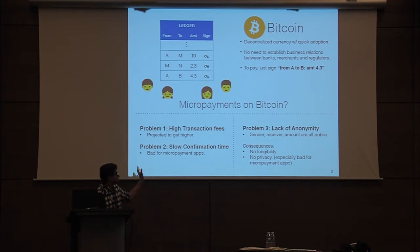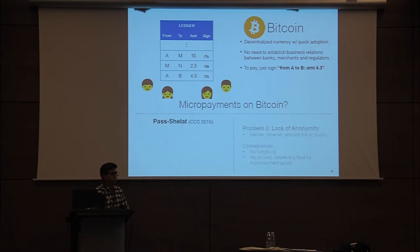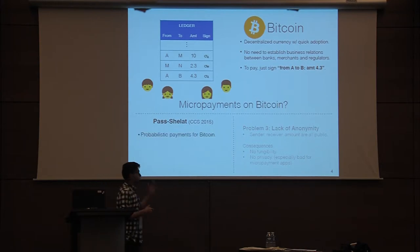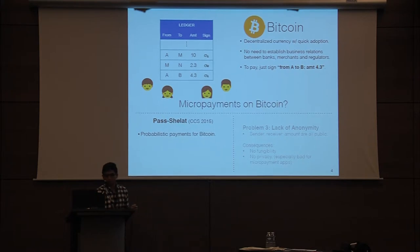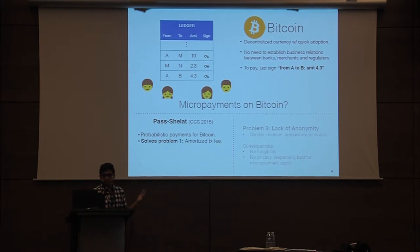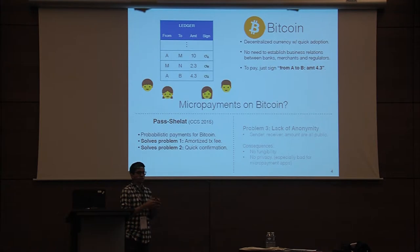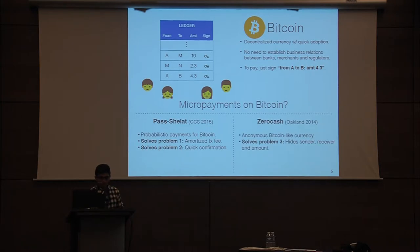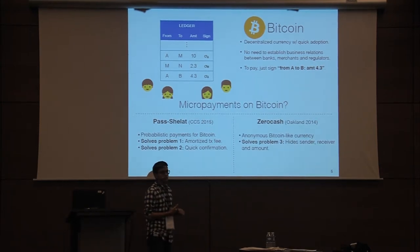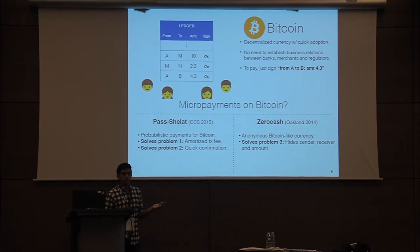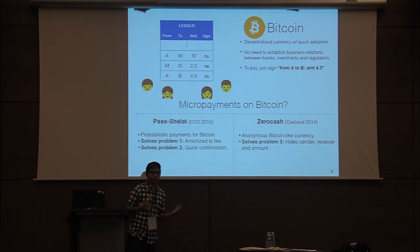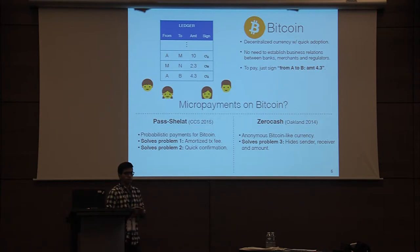Two separate works have dealt with these two classes of problems. The first is a work by Parson and Shalat at CCS a couple of years ago; they use the technique of probabilistic payments to implement micropayments for Bitcoin. This technique solves both the first two problems by amortizing the transaction fee and confirmation time across many payments which don't hit the ledger. To solve the problem of anonymity, ZeroCash was proposed at Oakland roughly three years ago — an anonymous Bitcoin-like currency which hides all information about the sender, receiver, and transaction amount for every transaction, so the ledger looks opaque to an outside observer.